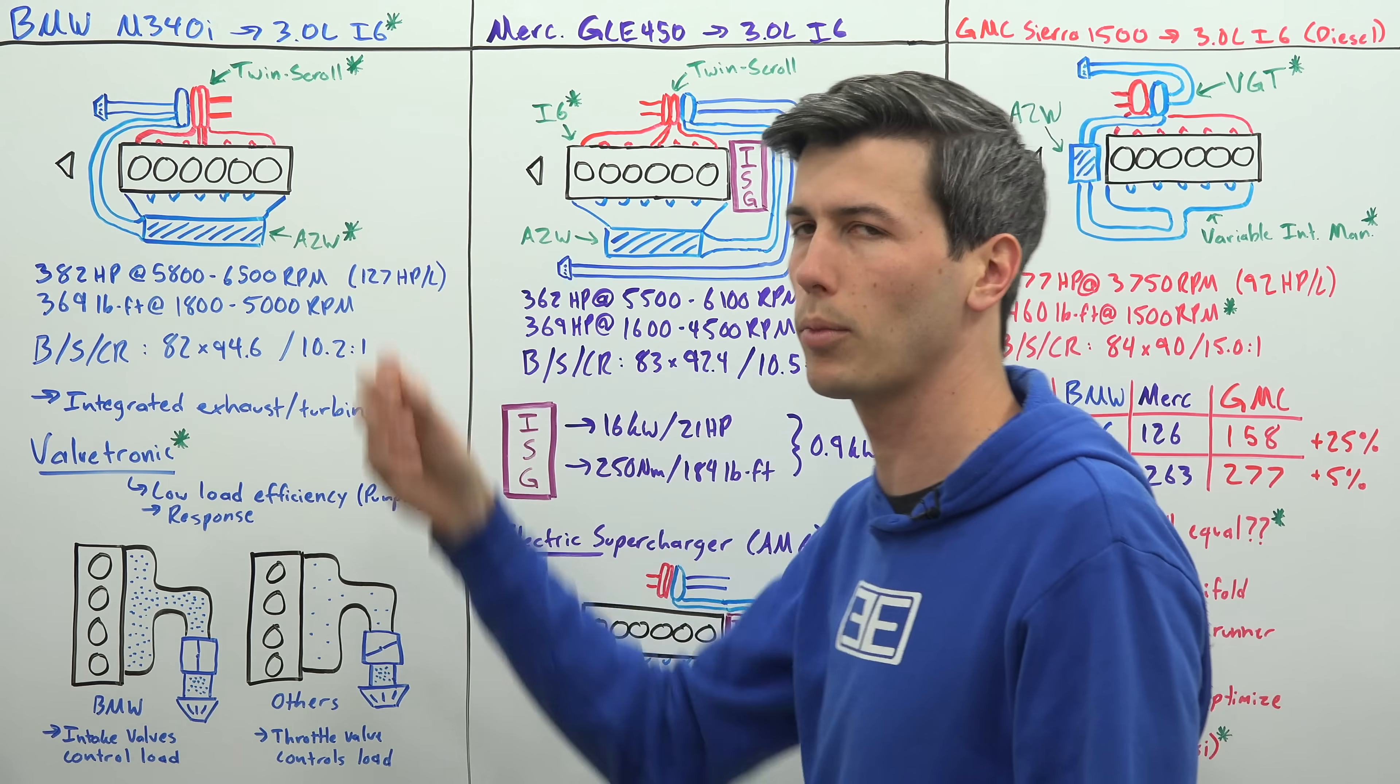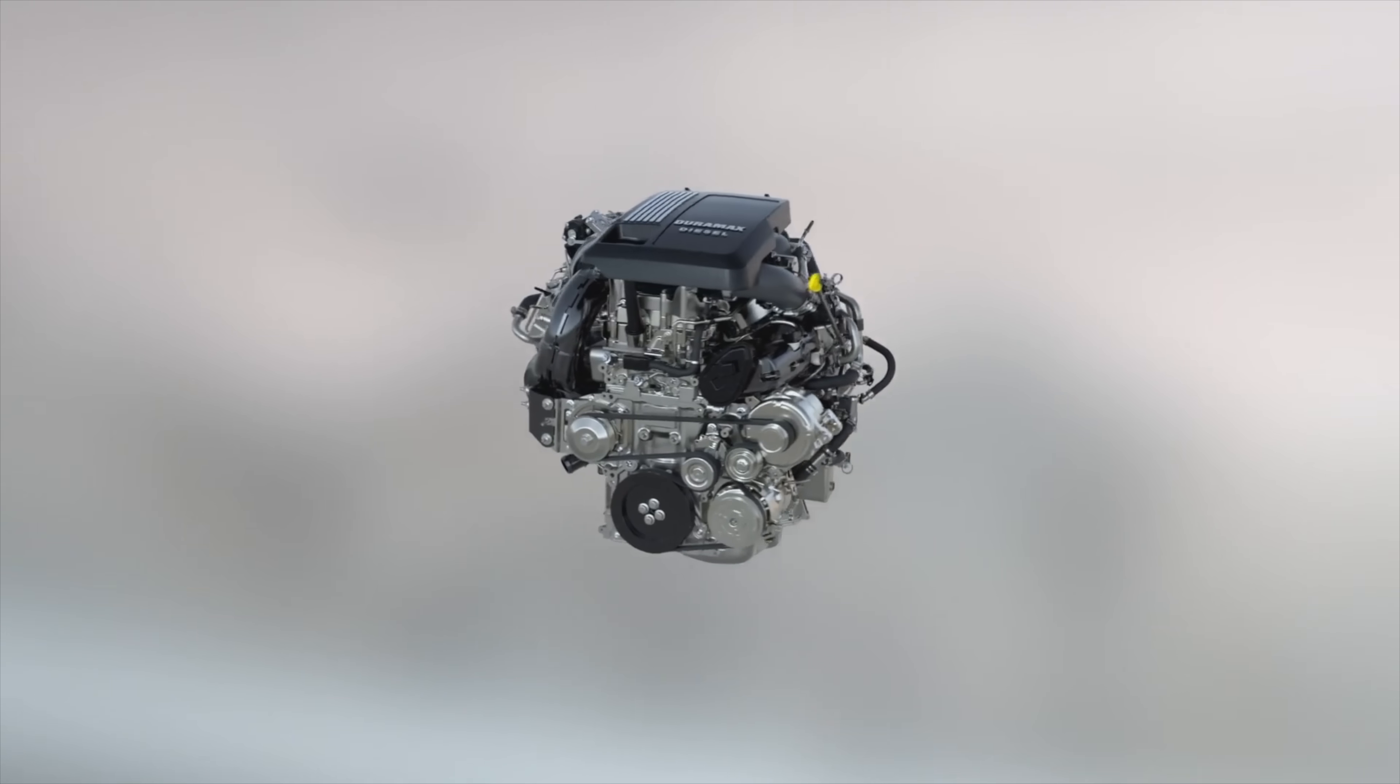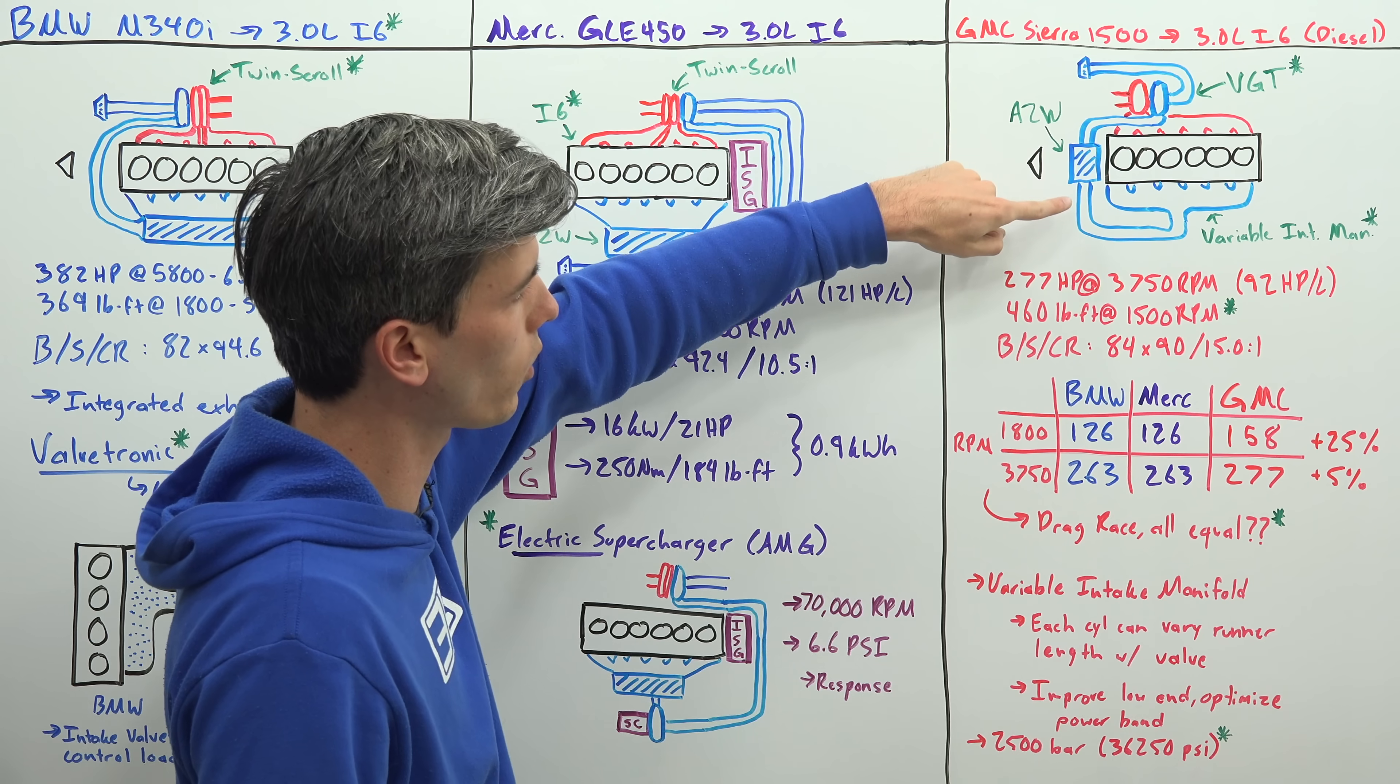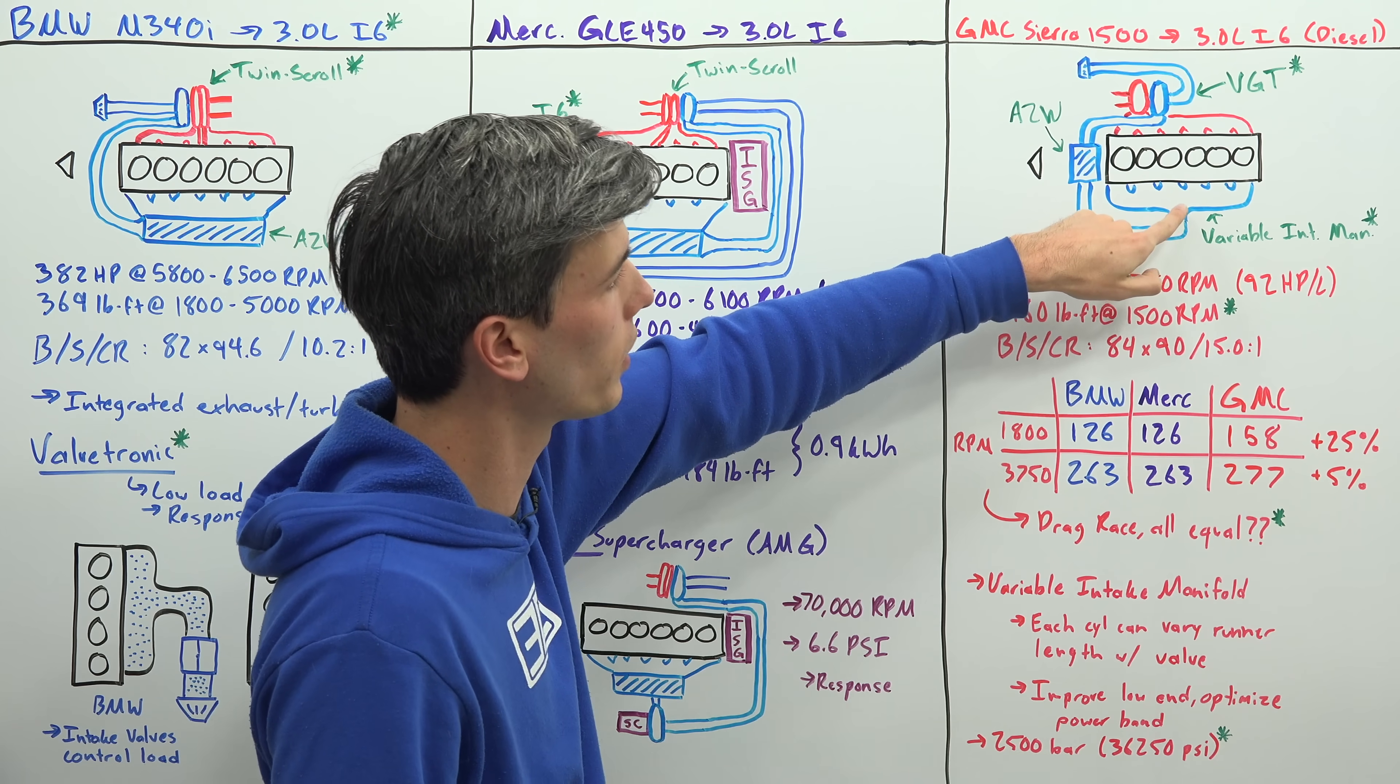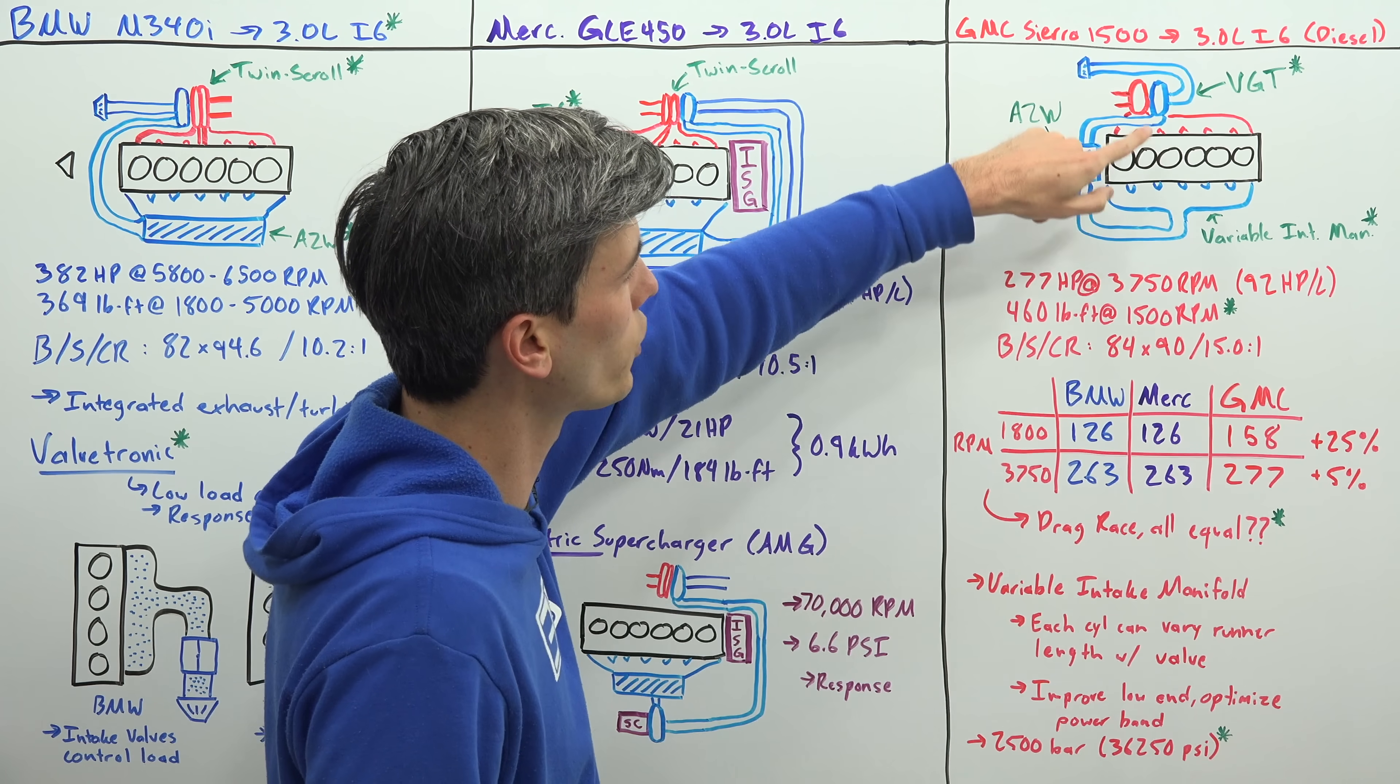Finally we have the diesel engine. Air comes through the intake, travels through the compressor of the turbocharger, through an air to water intercooler, through a variable intake manifold so we can actually change the length of the runners there using a valve.